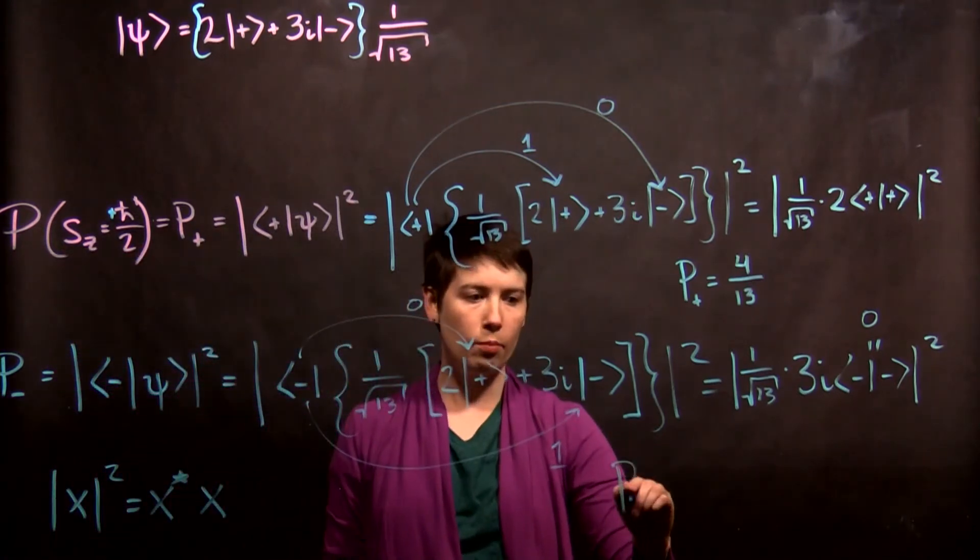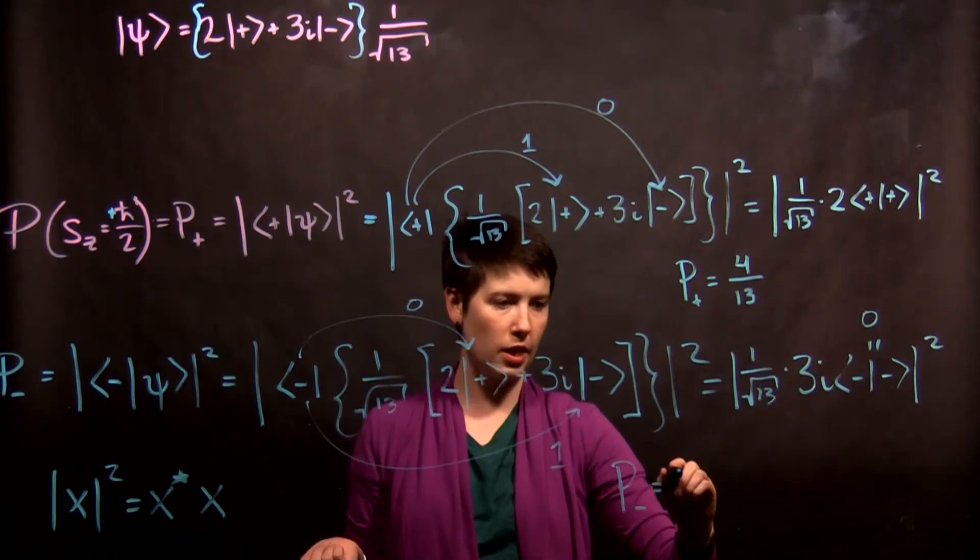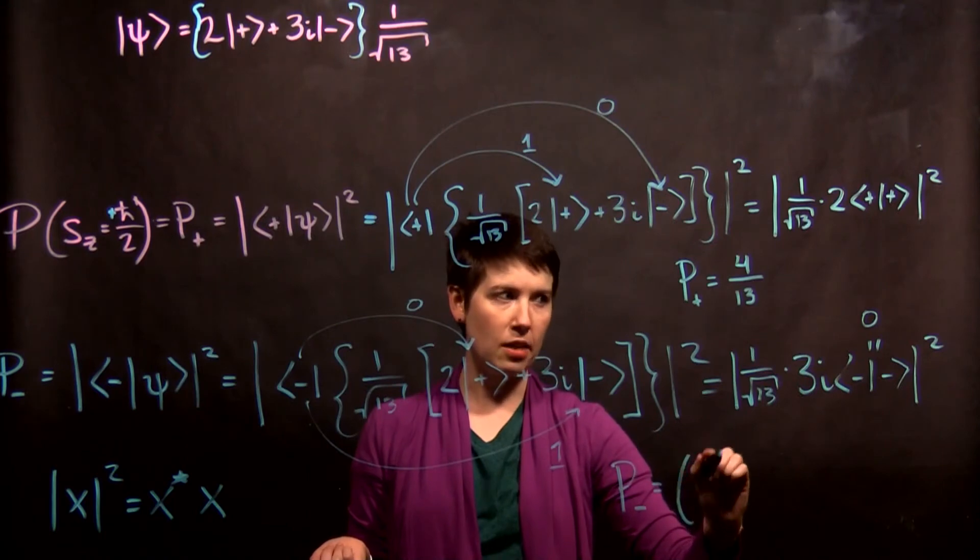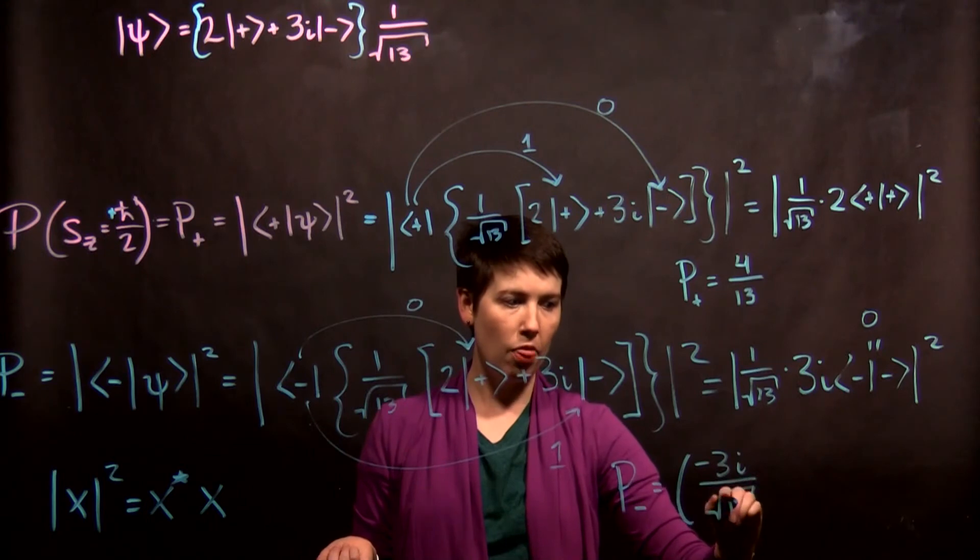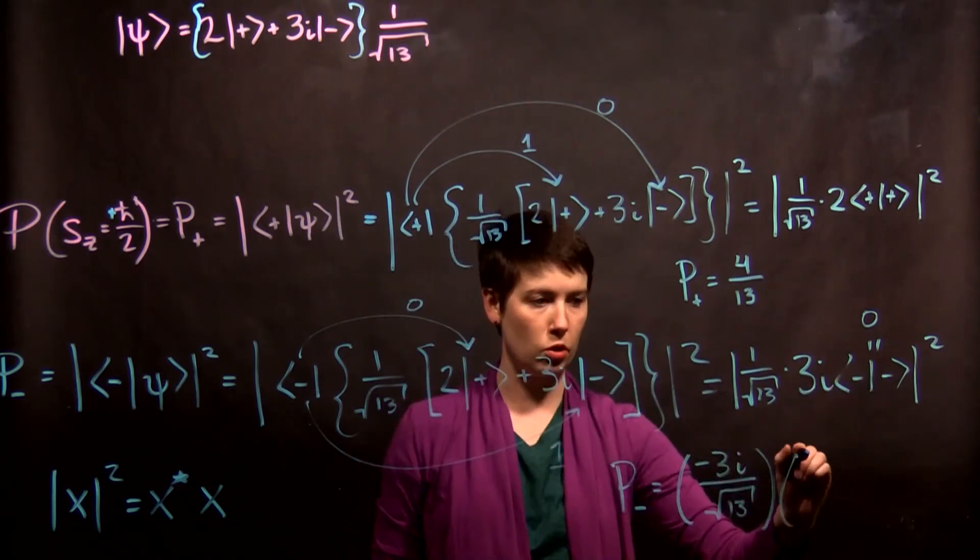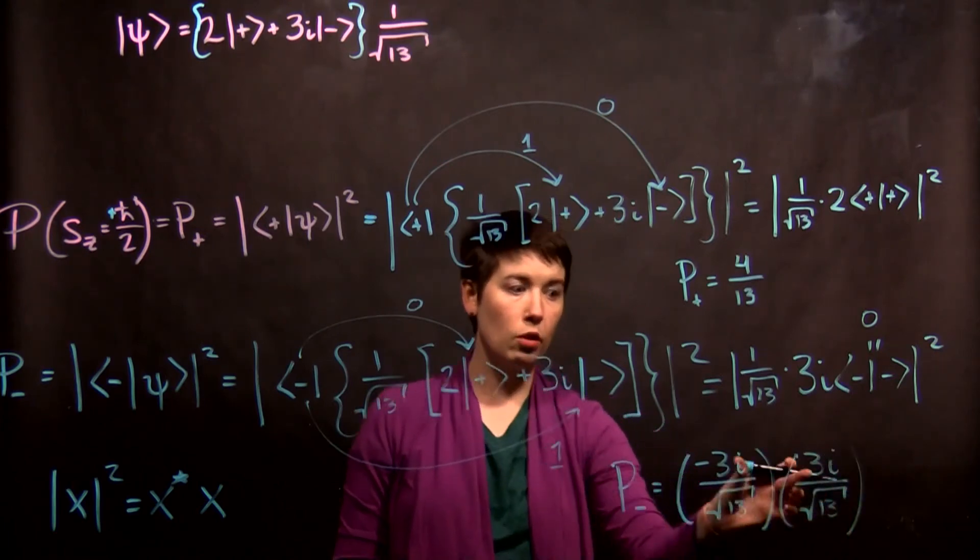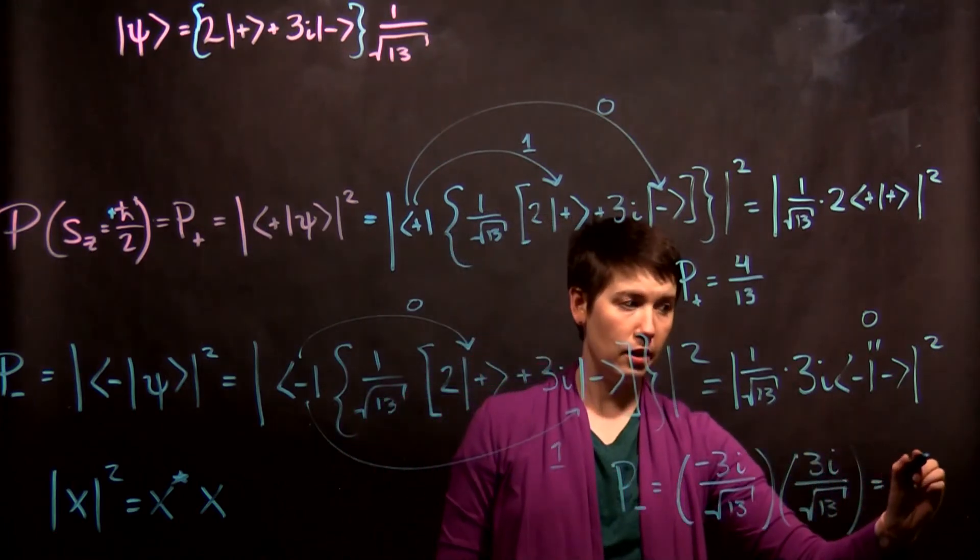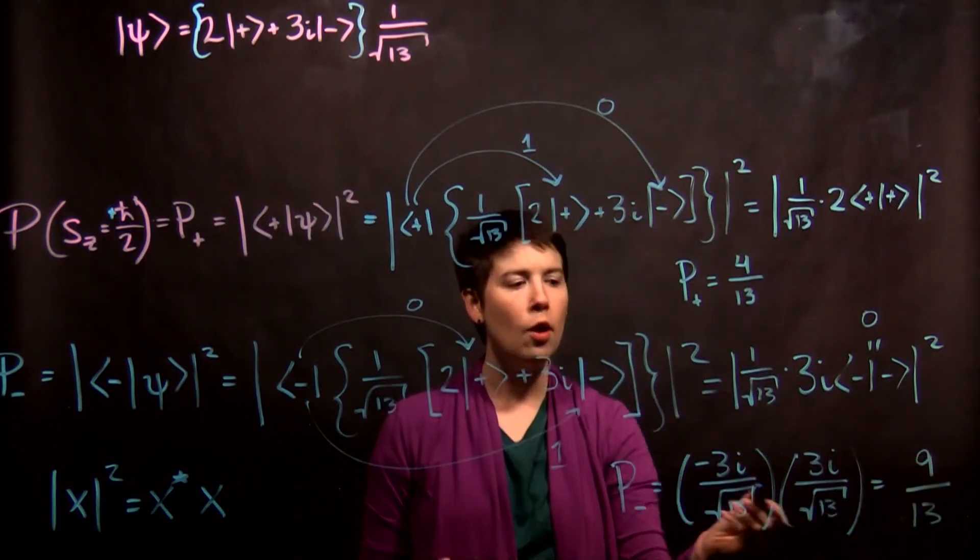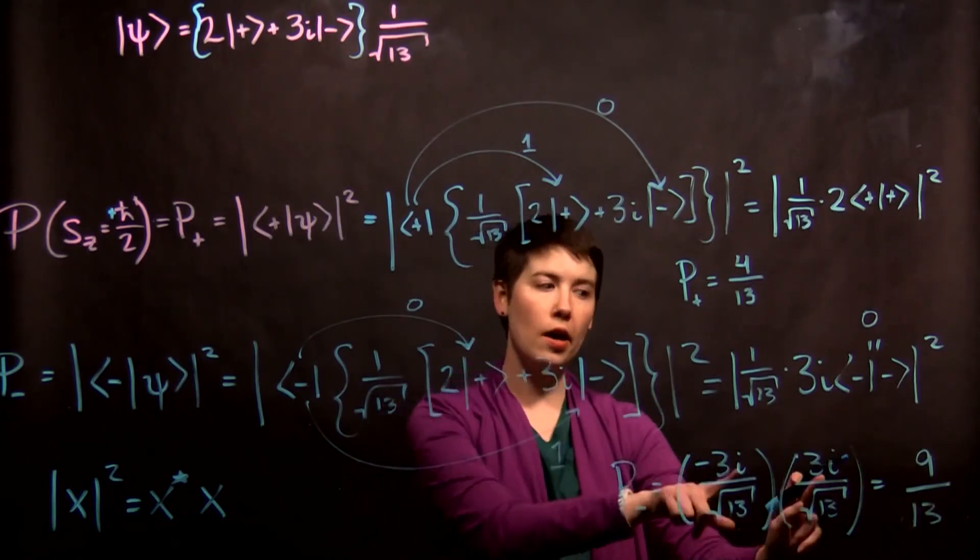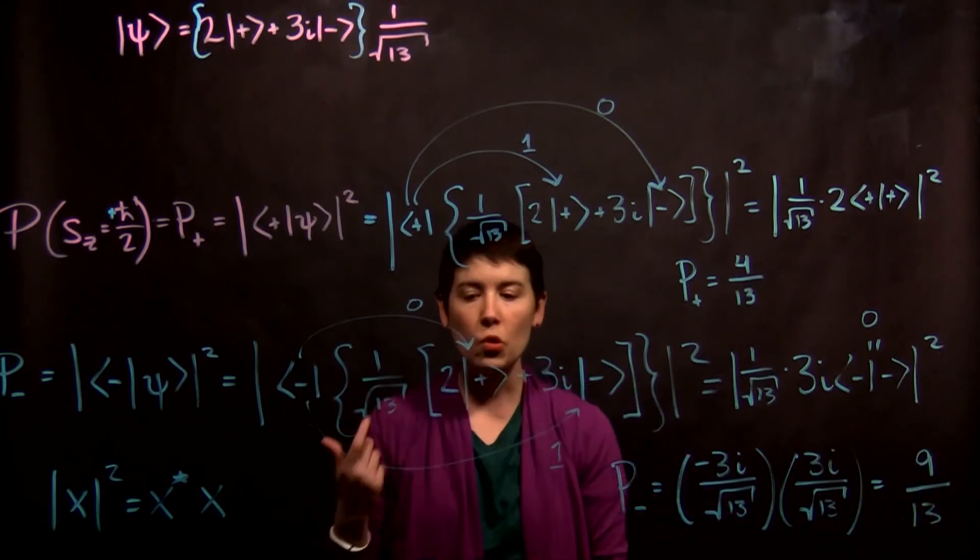So now when I have that probability, I'm actually going to write this as taking my entire thing and complex conjugating it, which is going to give me negative 3i over square root of 13. And then I'm going to multiply it by the original value, which is 3i over square root of 13. And so you see that we're going to get 9 over 13, square root of 13 times square root of 13 is 13. Then we have a minus i squared. So that i squared gives you a minus 1, that minus sign cancels it, so we get 9 thirteenths.